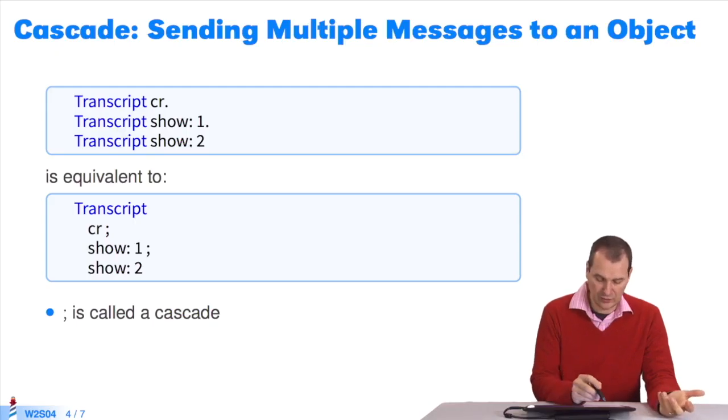There's something else. You'd often like to send several messages to the same object. But since we're lazy, we don't want to repeat the receiver. Look at this. I write transcript CR, transcript show, transcript. I already said transcript three times instead of once. I can do it. I'll use a cascade, the semicolon.